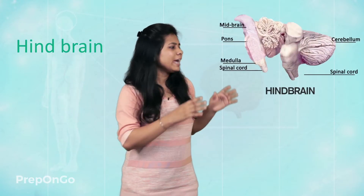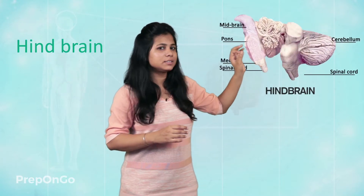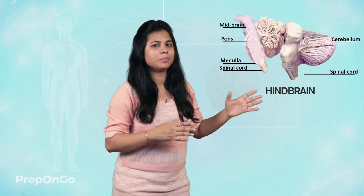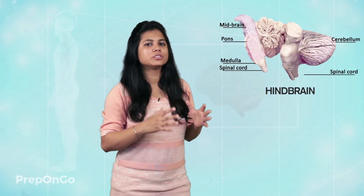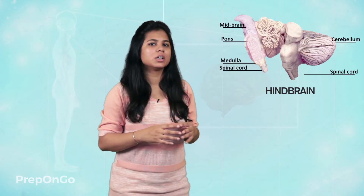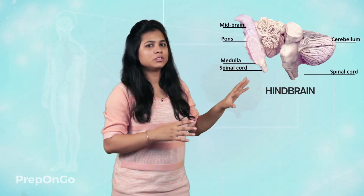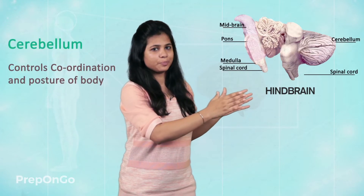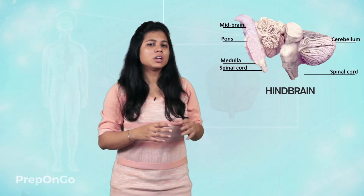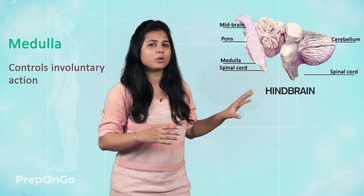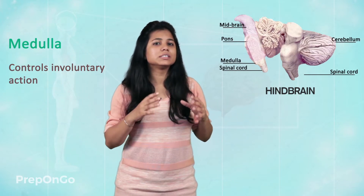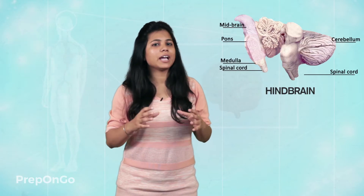When we talk of the hindbrain, it has three parts: cerebellum, medulla, and pons. The cerebellum performs the action of coordination — that is, adjustment of movements and also the posture of the body. The medulla is responsible for all the involuntary actions such as heartbeat, sneezing, coughing, and blinking of eyes. The pons are mainly responsible for the respiration process.